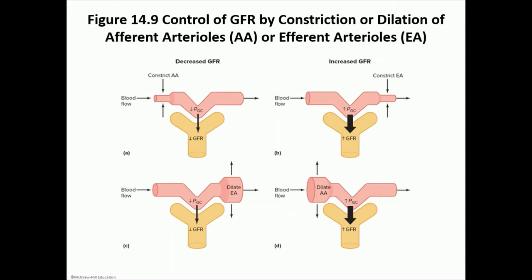Different scenarios affect GFR. Constriction of the afferent arteriole decreases blood going in, decreasing hydrostatic pressure in the capillaries and thus decreasing GFR. Dilation of the efferent arteriole allows more blood to leave, also decreasing hydrostatic pressure and GFR. Any scenario that decreases hydrostatic pressure in the glomerular capillaries decreases GFR. To increase GFR, you can constrict the efferent or dilate the afferent arterioles.